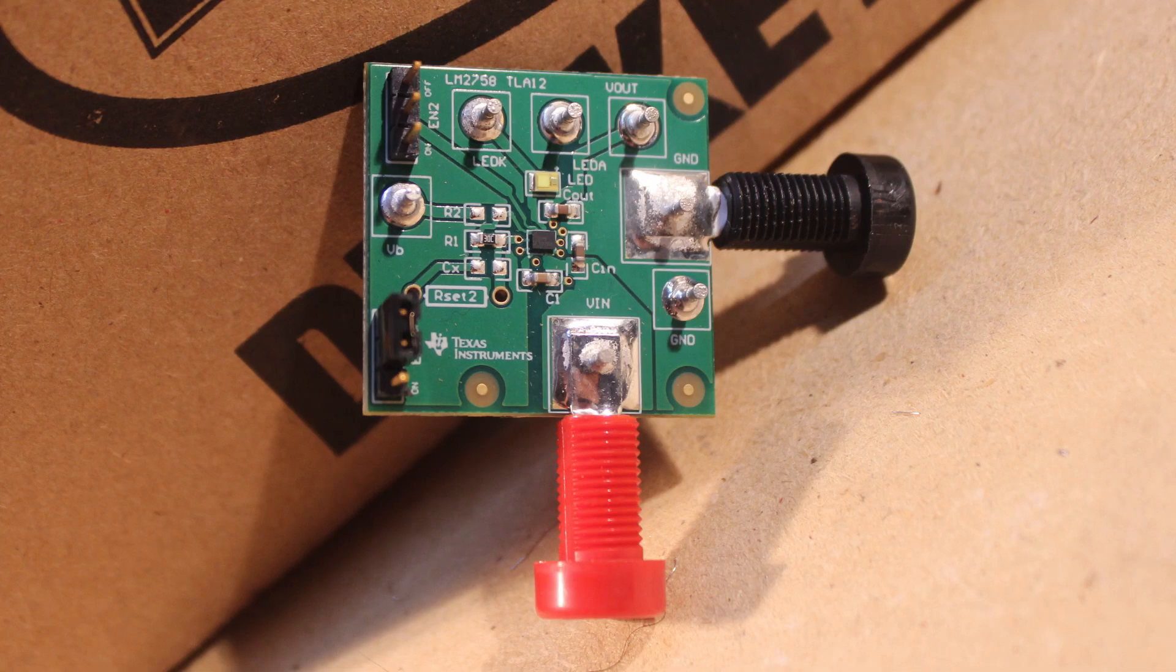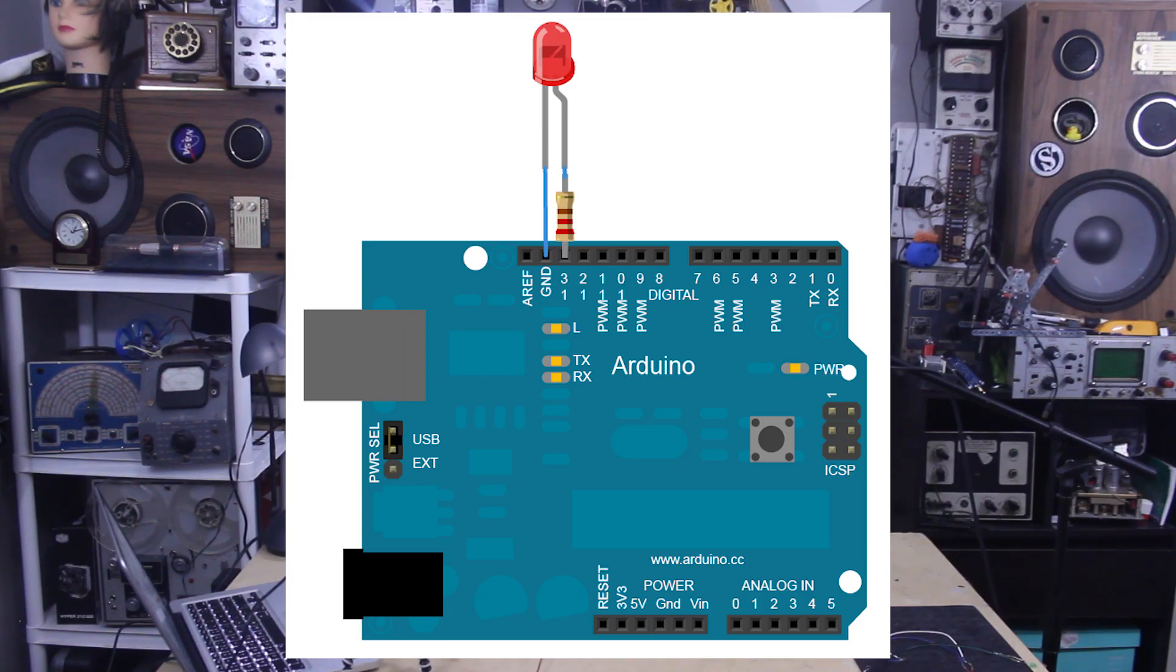Today we'll blink without delay using millis(), giving us the ability to perform multiple tasks at once. Thanks to Texas Instruments, we have this nifty little LED development board bright enough for you guys to see from over there. If you don't have one of these, you can use this circuit diagram or the Uno's built-in LED on pin 13, no extra hardware necessary.